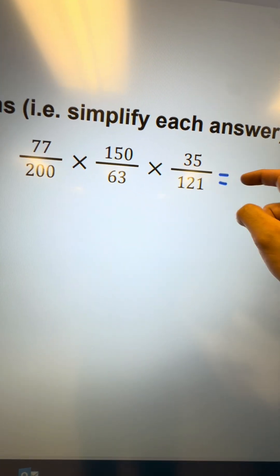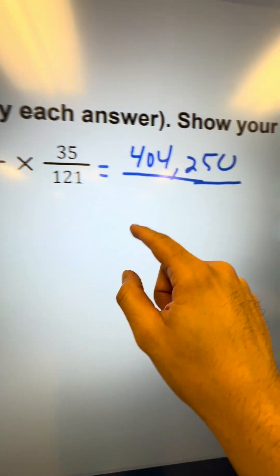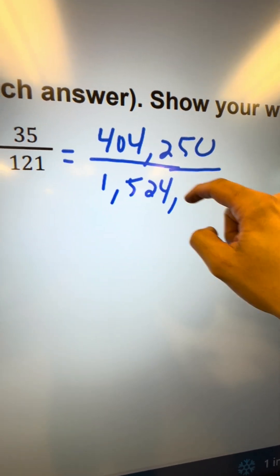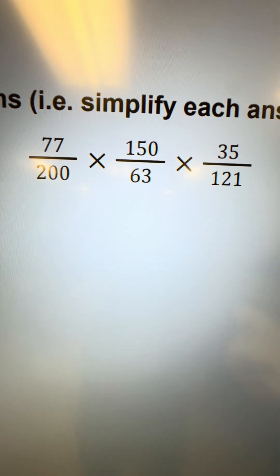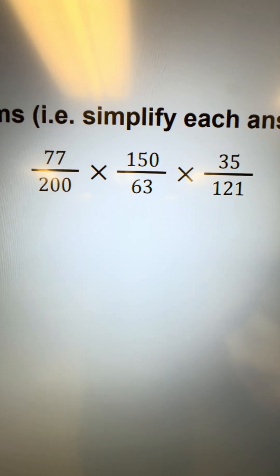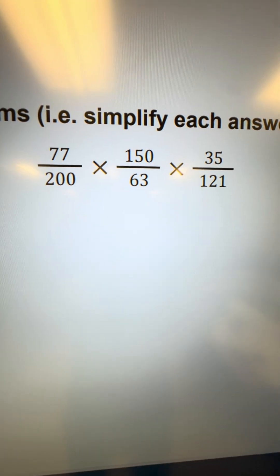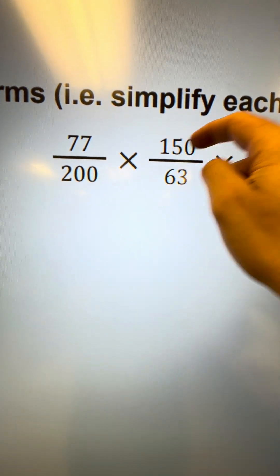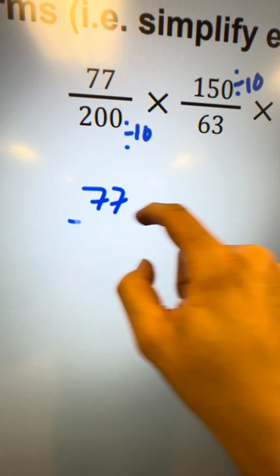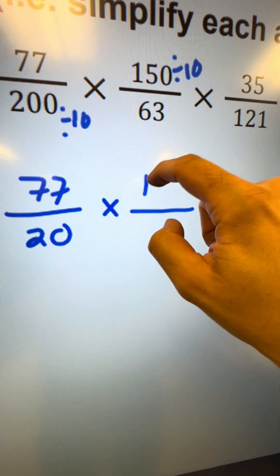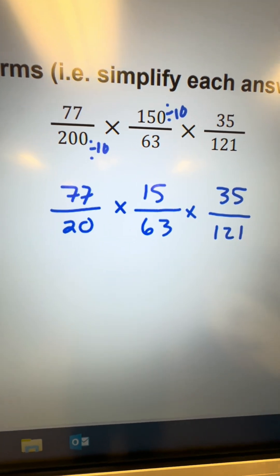These are problems where if you try to multiply everything together, you're going to get a number that's really big — 404,250 for your numerator, and 1,524,600 when you multiply all the denominators. Trying to simplify that is too complicated. As I mentioned, if you notice common factors you can divide by right away, do that ahead of time to save some time. Looking at two numbers that both end in zero, I can divide each by 10 to get the new problem: 77 over 20 times 15 over 63 times 35 over 121.